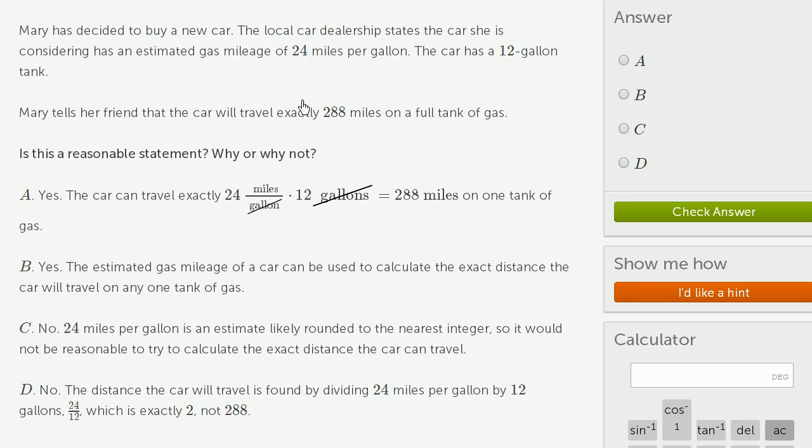You can't say that it's going to go exactly 288 miles without knowing exactly how this was measured. And frankly, every car is going to be a little bit different. The octane of the fuel will be a little bit different. That's why it's hard to make this exact assumption that the car can travel exactly 24 miles per gallon. The dealership just gave an estimate.